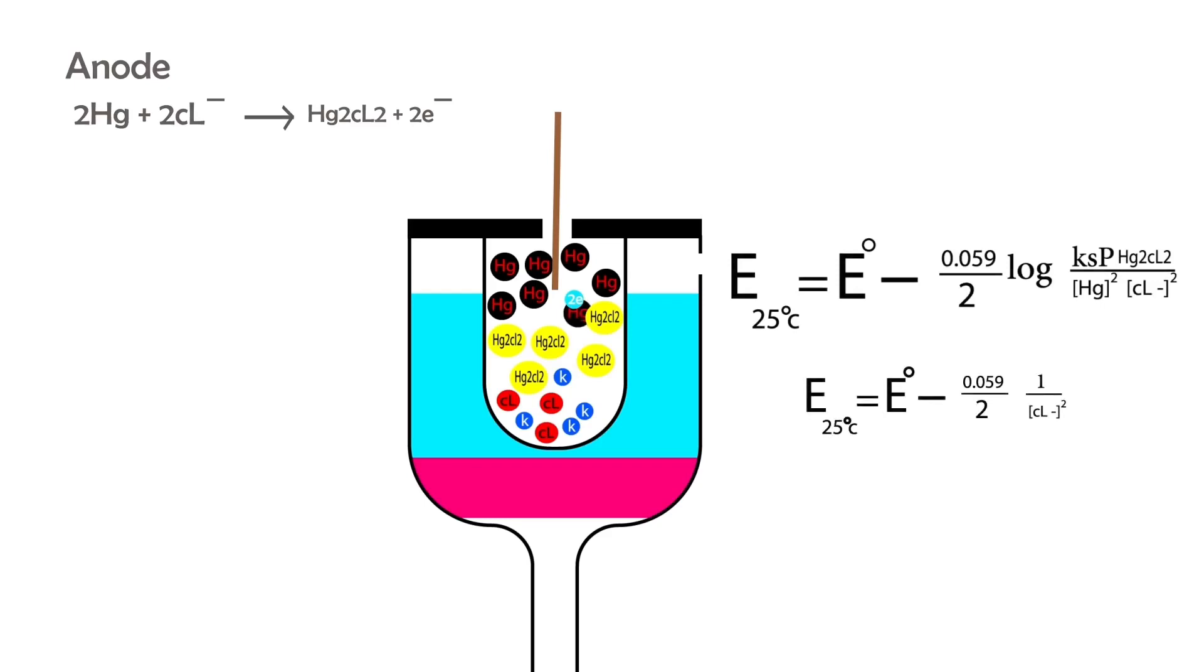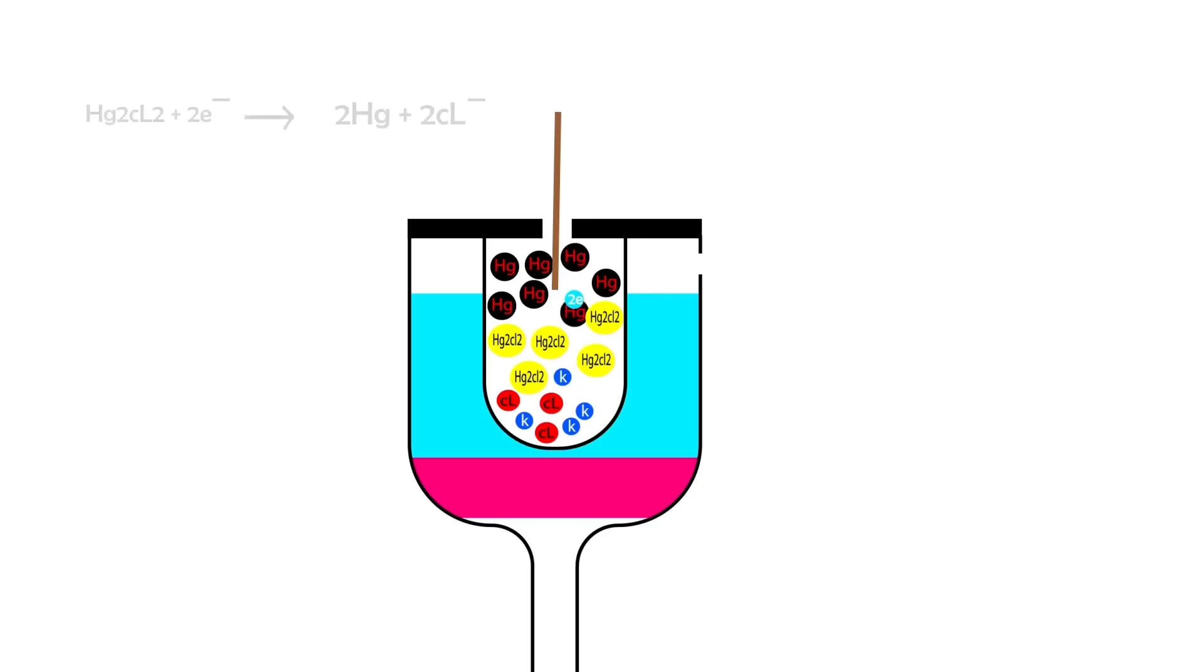But, if calomel acts as cathode, there will be some adjustment. If calomel acts as cathode, the equation will be as follows, which means that the mercury chloride accepts two electrons and is converted to mercury. Thus, the Nernst equation that expresses this case will be as follows. As we explained earlier, we neglect the value of Ksp of mercury chloride and the mercury.